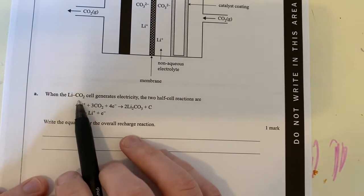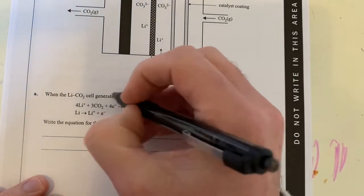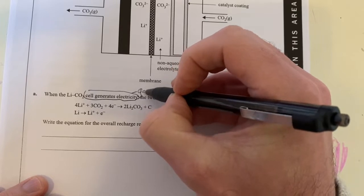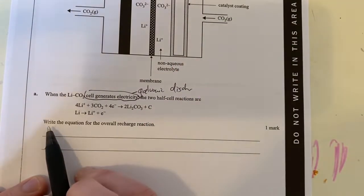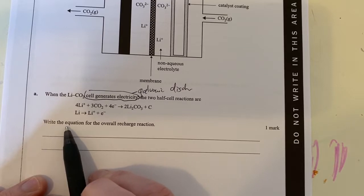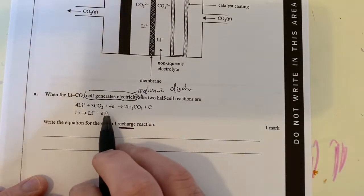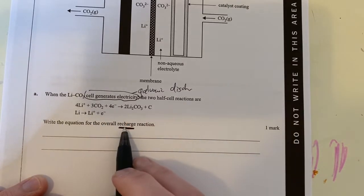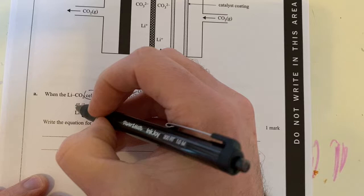When the lithium carbon dioxide cell generates electricity, we have two half cell reactions here. So generating electricity, this is when we are doing it galvanic style, and it's discharge. So write the equation for the overall recharge reactions. What that means is we're going to reverse whatever reactions we have here. If this is discharge, recharge means we're going backwards. But regardless of that, let's just try and add these two equations together, and then we'll flip it around as we go along.